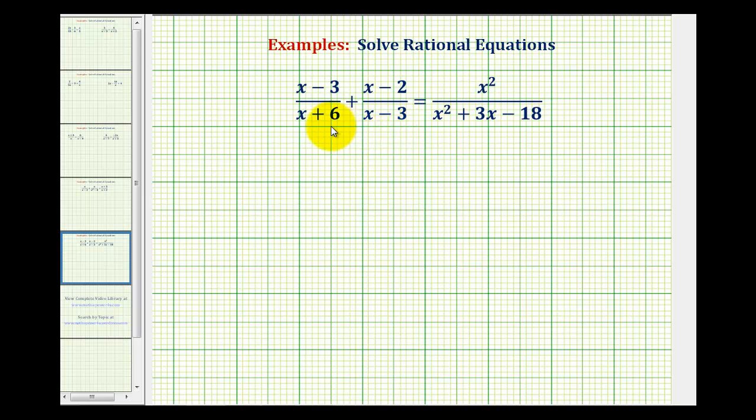This expression will be the least common denominator, or least common multiple, of the quantity x plus six, the quantity x minus three, and the quantity x squared plus three x minus 18.